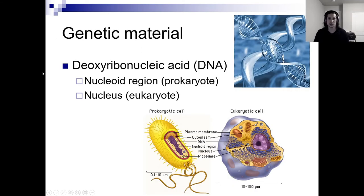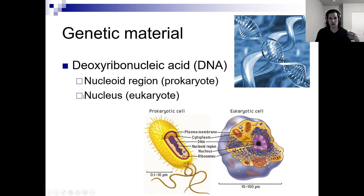Genetic material: deoxyribonucleic acid — DNA — is what we have as our genetic material. Remember, in prokaryotes you don't have a nucleus; you've got a nucleoid region. In eukaryotic cells we have a nucleus.